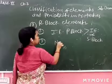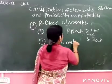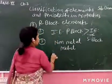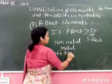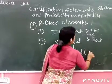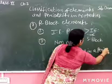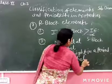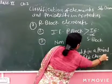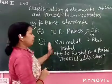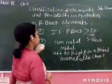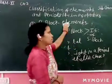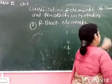Third character: in this group both non-metals and metals are included. From left to right in a period, non-metallic character increases. And in a group from top to bottom, metallic character increases. So metallic character increases in a group and non-metallic character increases in a period.